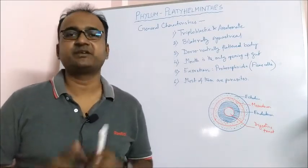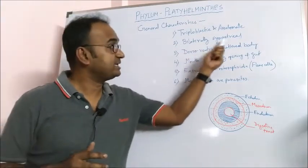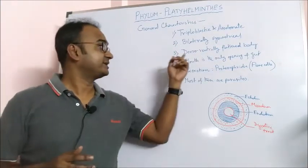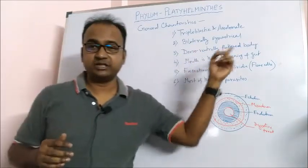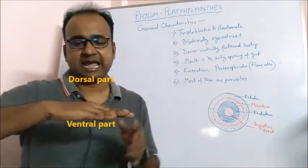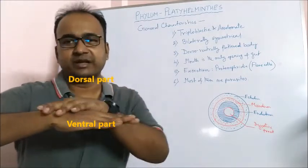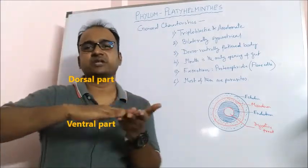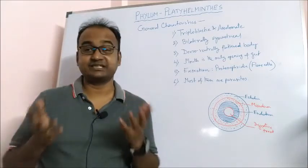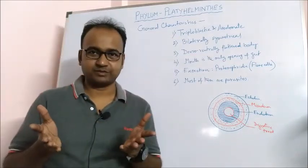Platyhelminthes is the first animal phylum with a bilaterally symmetrical body plan. The next character: the body is dorso-ventrally flattened — the dorsal part and the ventral part are compressed, making the animal dorso-ventrally flattened and leaf-like, hence the name Platyhelminthes or flatworm.